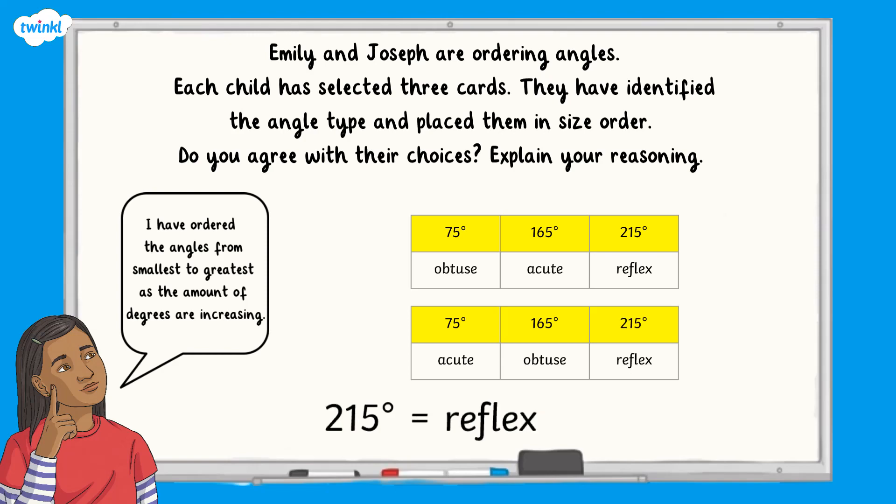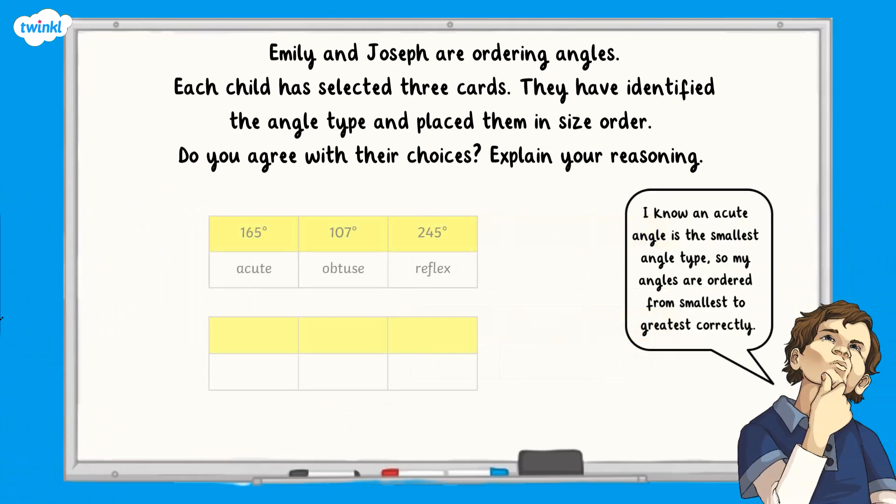Joseph has not identified the acute angle correctly. 165 degrees is an obtuse angle. An acute angle is anything less than 90 degrees. The other two angles have been identified correctly, but he has not ordered them correctly as 107 degrees is smaller than 165 degrees.